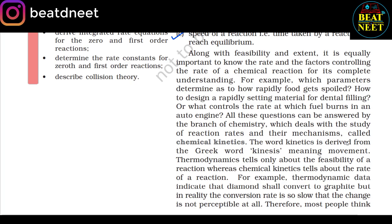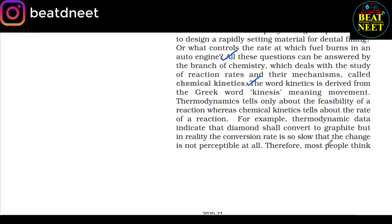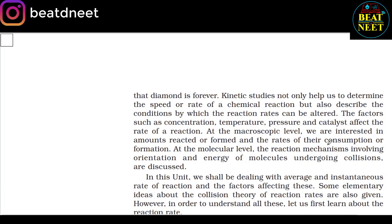Along with feasibility and extent, it is equally important to know the rate and the factors controlling the rate of a chemical reaction for its complete understanding. For example, which parameters determine how rapidly food gets spoiled? How to design a rapidly setting material for dental filling? Or what controls the rate at which fuel burns in an auto engine? All these questions can be answered by the branch of chemistry which deals with the study of reaction rates and their mechanism, called chemical kinetics. The word kinetics is derived from the Greek word kinesis, meaning movement. Thermodynamics tells only about the feasibility of a reaction, whereas chemical kinetics tells about the rate. For example, thermodynamic data indicate that diamond shall convert to graphite, but in reality the conversion rate is so slow that the change is not perceptible at all. Therefore, most people think that diamond is forever.